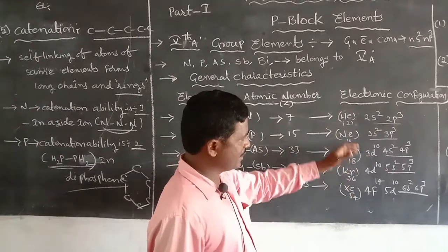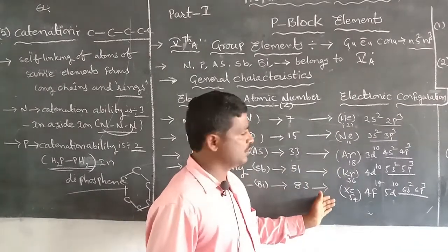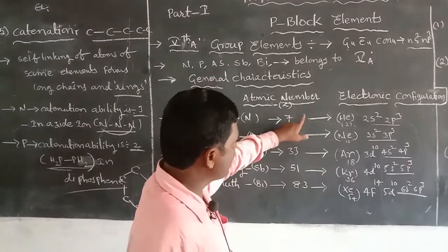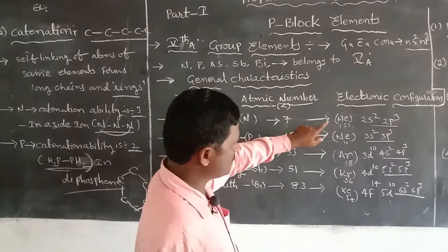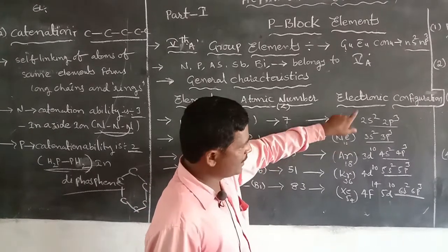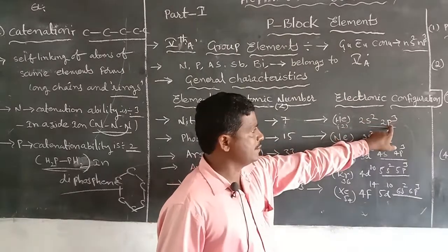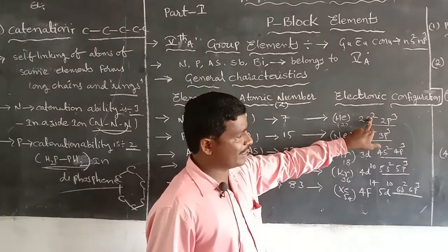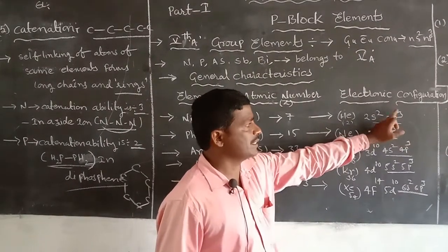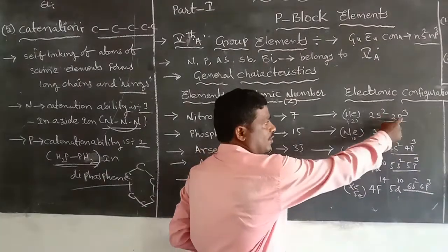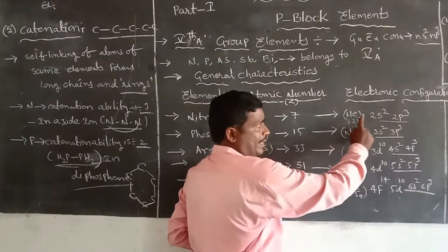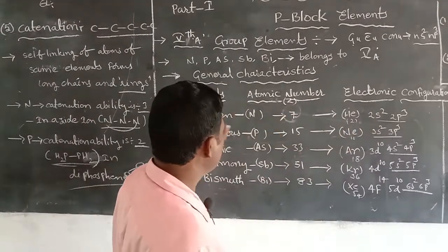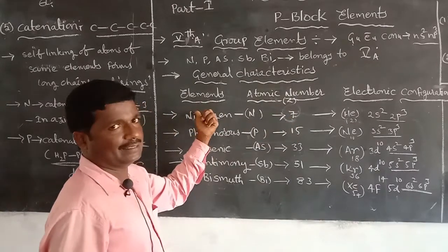The electron configuration of nitrogen is: [He] 2s² 2p³. The outermost shell considers only 5 electrons — the s orbital has 2 electrons and the p orbital has 3 electrons; 2 + 3 = 5. Adding the helium core of atomic number 2: 5 + 2 = 7, which is the atomic number of nitrogen.